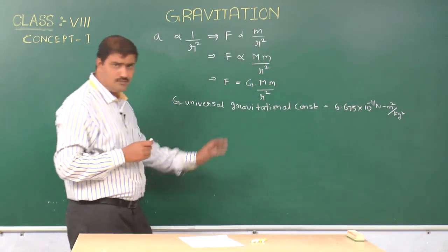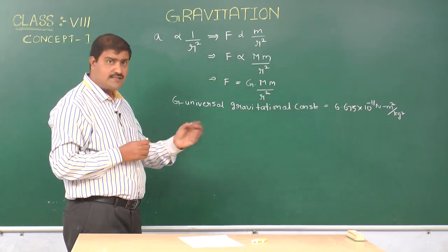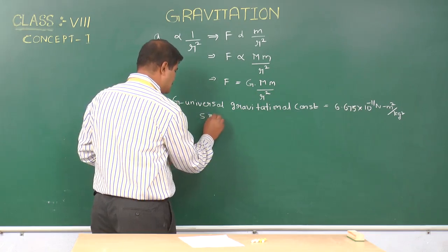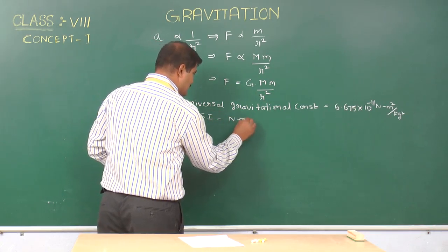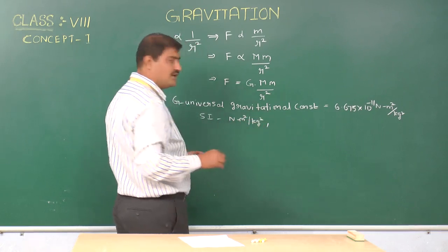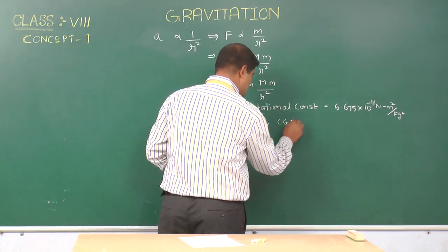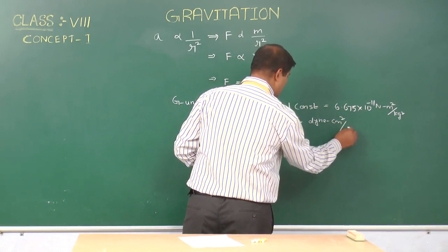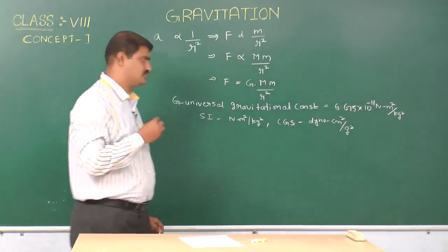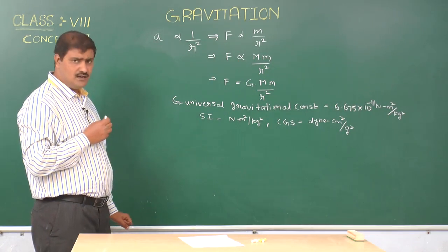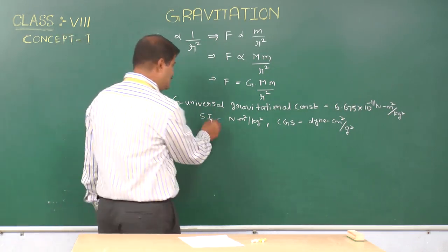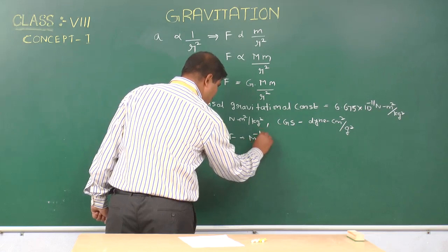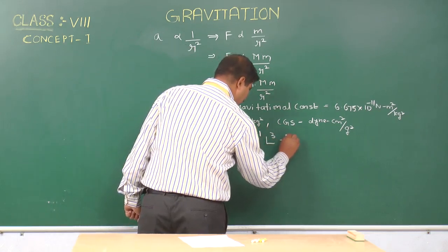Newton meter square per kg square is the SI unit of the universal gravitational constant. So the SI unit is Newton meter square per kg square. The CGS unit is dyne centimeter square per gram square. The dimensional formula of the universal gravitational constant is M minus 1, L 3, T minus 2.